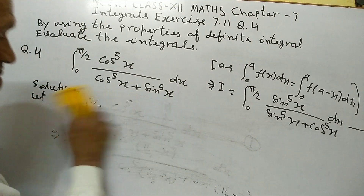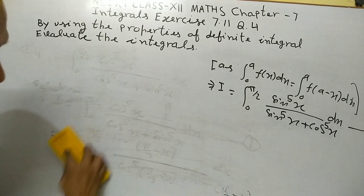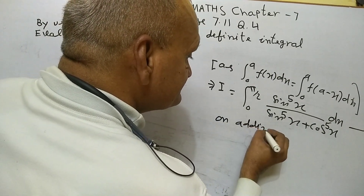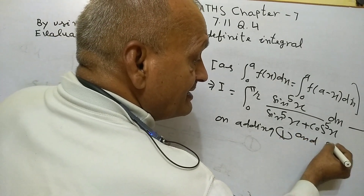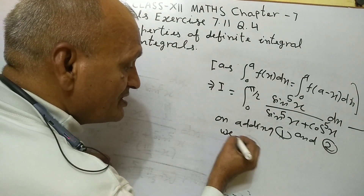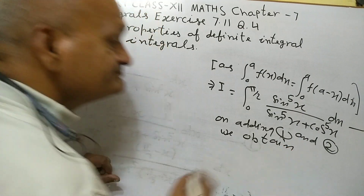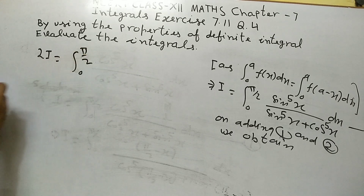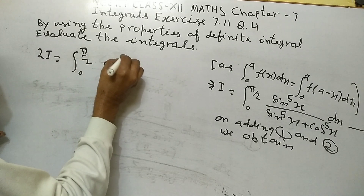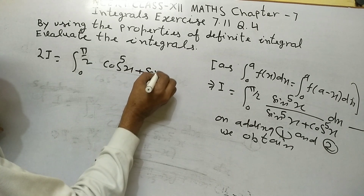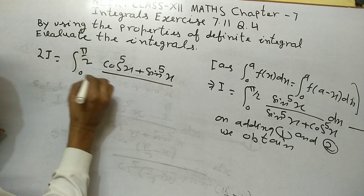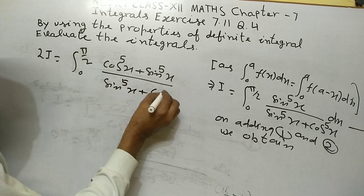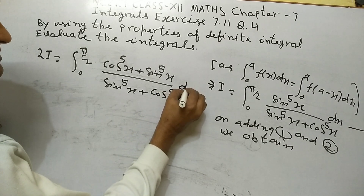On adding equation 1 and equation 2: I plus I equals integral from 0 to π/2 of (cos⁵x plus sin⁵x) upon (sin⁵x plus cos⁵x) dx.